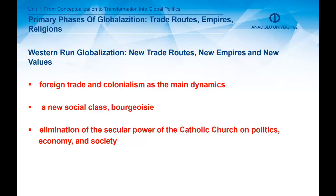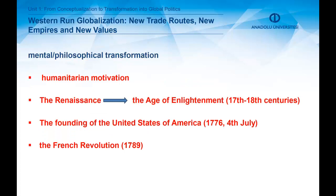The age of discovery paved the way for a new production and trade type, and created a transatlantic world in which foreign trade and colonialism became main dynamics. And then a new social class, the bourgeoisie, emerged, and they increased their economic and political influence gradually. They succeeded in eliminating the secular power of the Catholic Church on politics, economy, and society — though the Catholic Church had been the main figure of European politics throughout the Middle Ages.